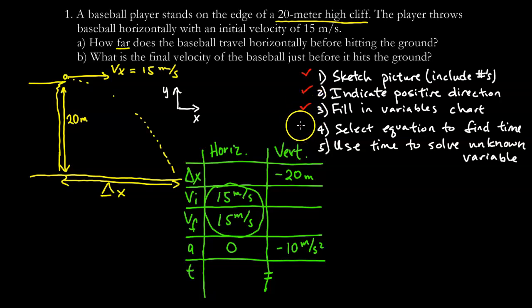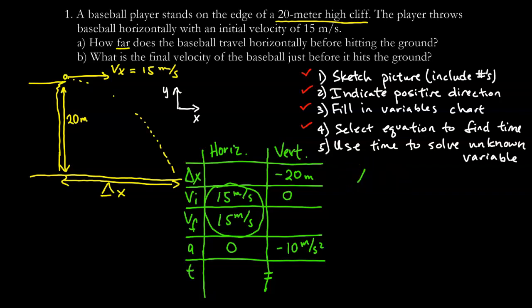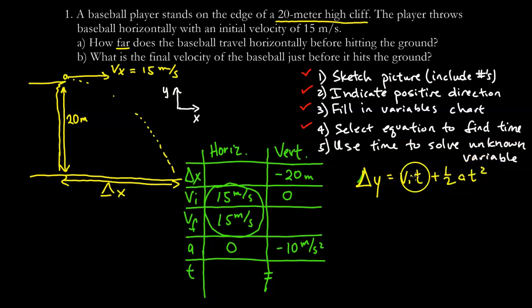Step four is to select an equation and find the time. Also note that the initial vertical velocity is zero. We need an equation with displacement, initial velocity, acceleration, and time — but not final velocity. That equation is: delta y equals v_i times t plus one-half times a times t squared.